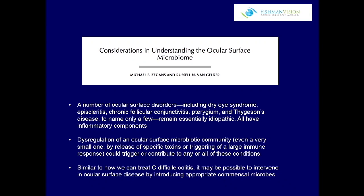The textbooks say 75% of the time you'll find nothing; in my practice it's like 99%. We rarely make a new diagnosis from an episcleritis workup unless the patient already has rheumatoid arthritis or lupus. So why do we get episcleritis? Chronic follicular conjunctivitis, pterygium, Tygeson's disease — a lot of these things are idiopathic. The thought is that microbes in your eye interact with your eye health just like gut microbes interact with systemic health, driving inflammatory T-cell responses.